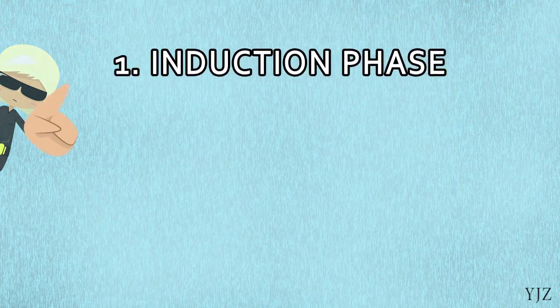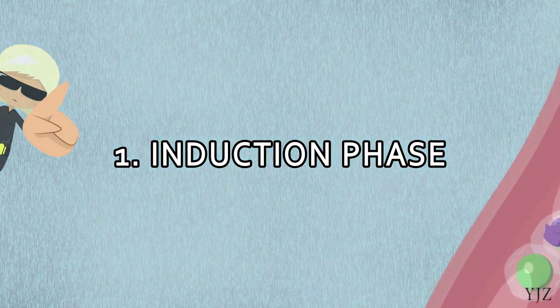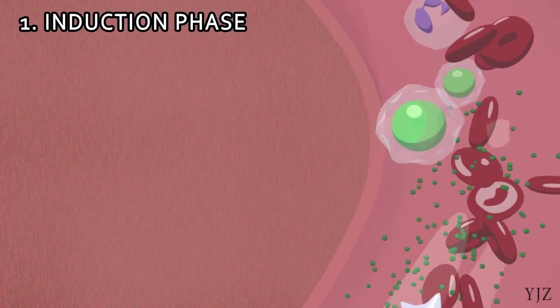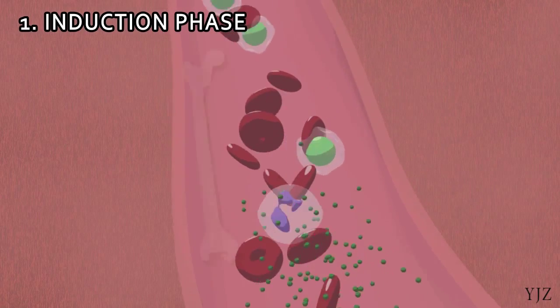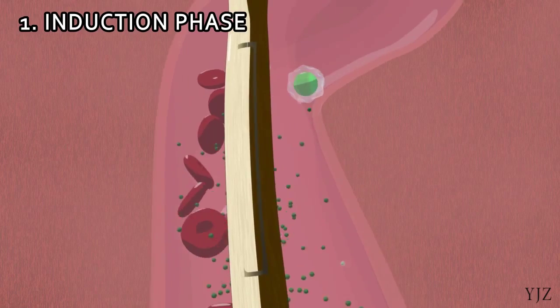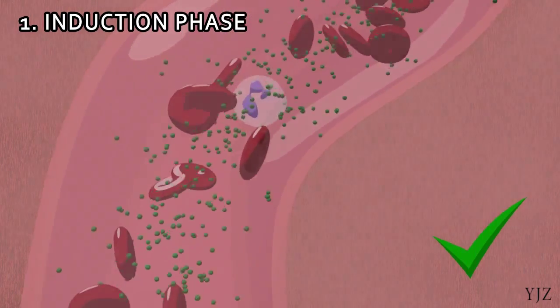The first phase of therapy is called the induction phase. The goal of this phase is to kill as many leukemia cells as possible. Then, doctors will recheck the bone marrow to determine the remission status.